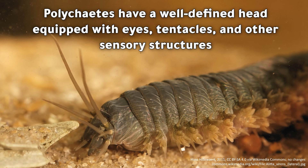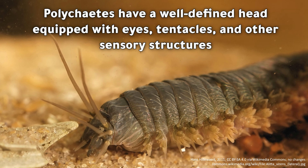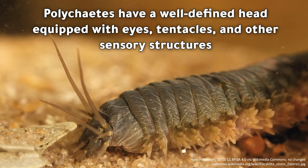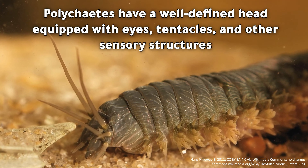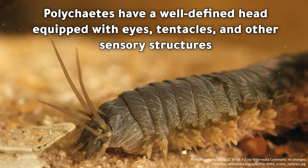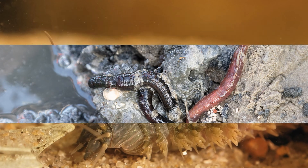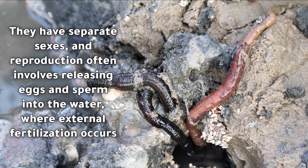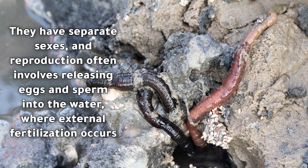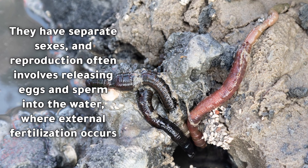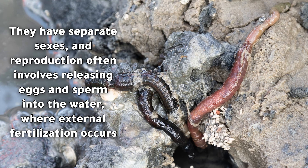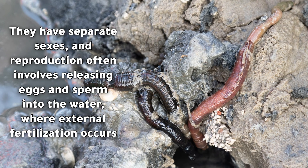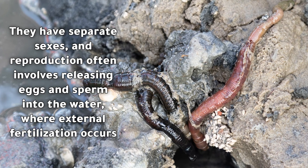Polychaetes have a well-defined head equipped with eyes, tentacles, and other sensory structures. They have separate sexes, and reproduction often involves releasing eggs and sperm into the water where external fertilization occurs.